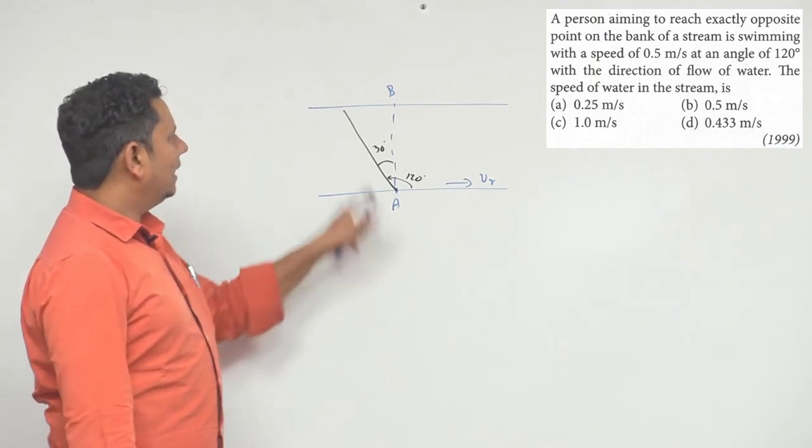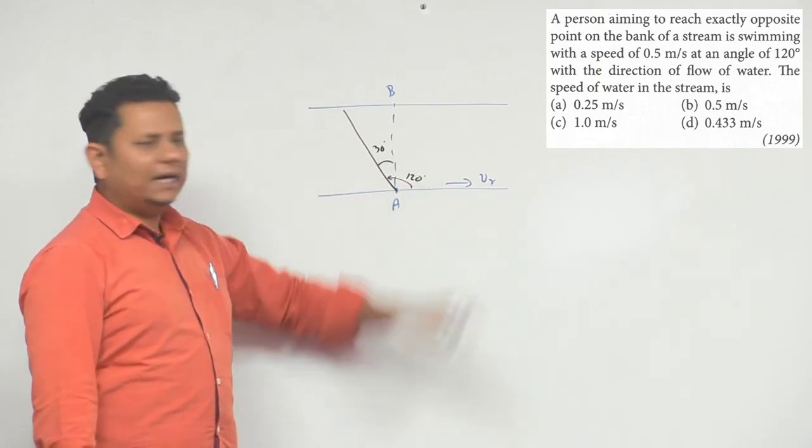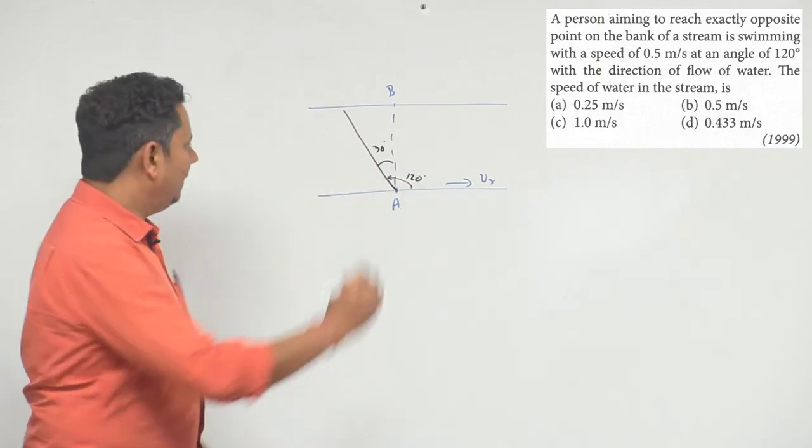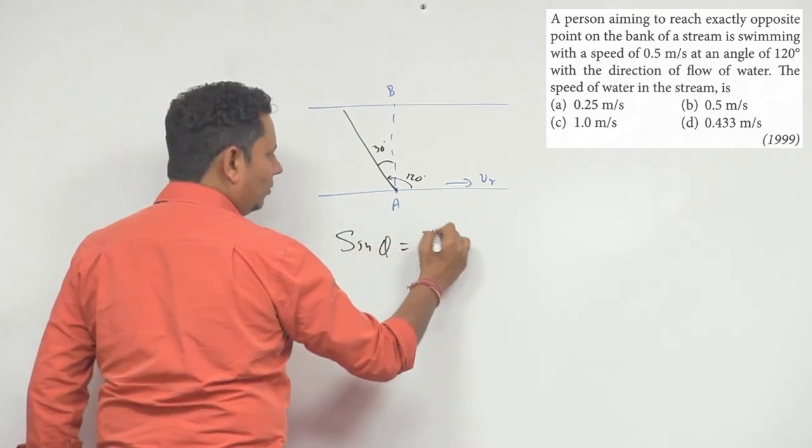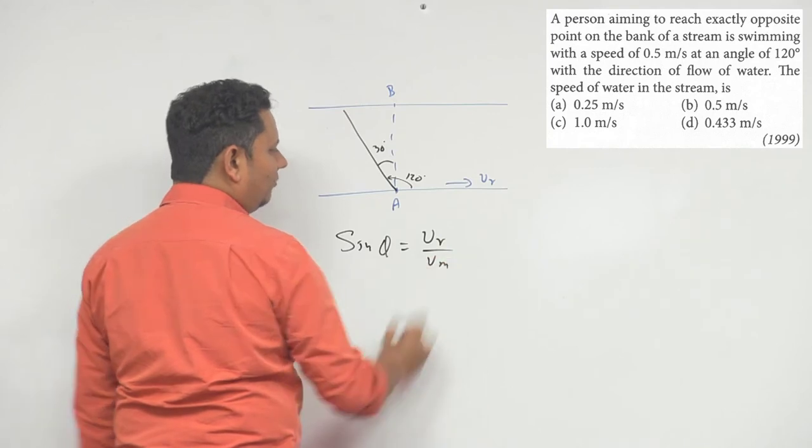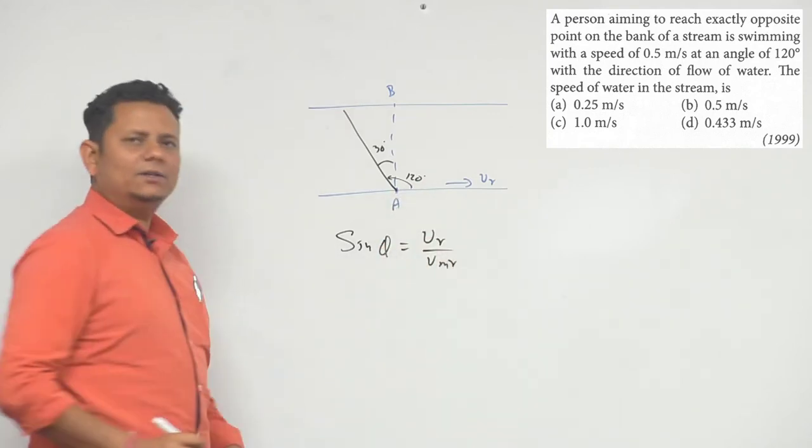In this case, we can determine the value of VR. Here we can use a simple relation which says sin θ is equal to VR divided by VM with respect to river. This can be directly used.